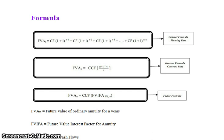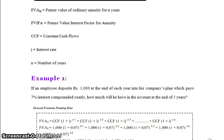The factor formula is: FVAN = CCF × FVIFA(i%, n). The abbreviations used are: FVAN = future value of ordinary annuity for n years; FVIFA = future value interest factor for annuity; CCF = constant cash flows; i (or k) = interest rate; n = number of years.